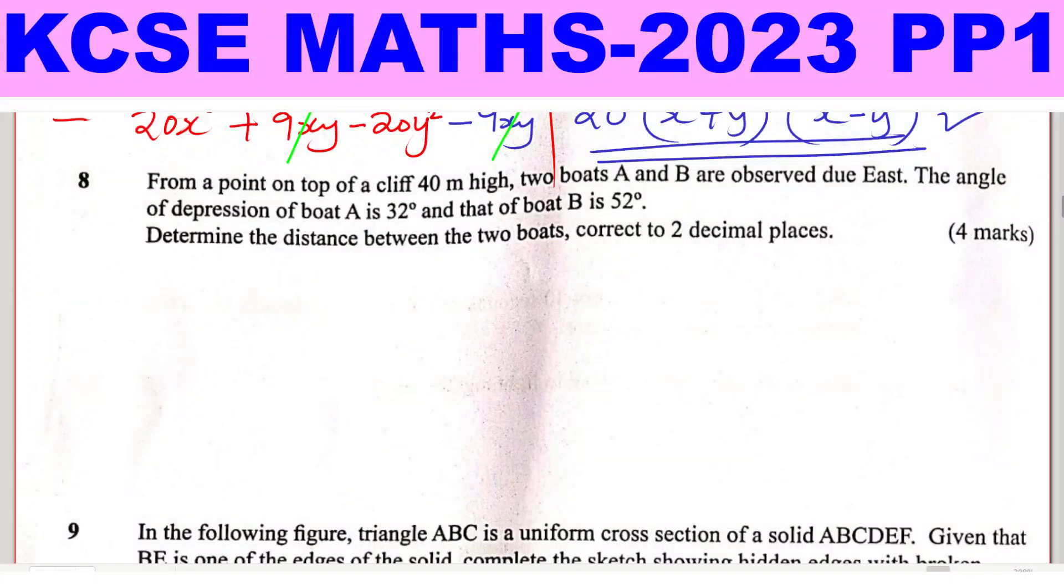Question 8. From a point on top of a cliff 40 meters high, two boats A and B are observed due east. The angle of depression of boat A is 32 degrees and that of boat B is 52 degrees. Determine the distance between the two boats, correct to two decimal places.